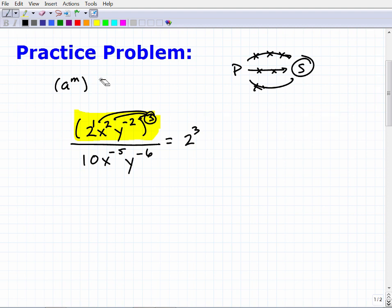So this kind of goes to this concept here, here's a rule, a to the m, all that to the n power is equal to a to the m times n. So you're distributing that outside exponent to the inside exponent. So we have two to the third times, this is x squared because I'm going to multiply that squared by three. So that's going to be x to the six and this would be y to the negative six.